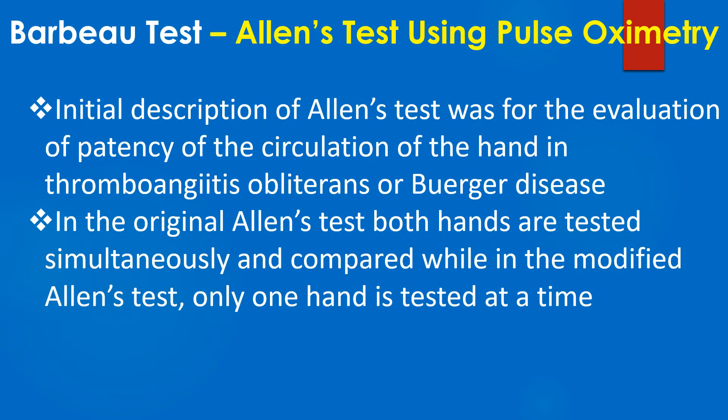The initial description of Allen's test was for the evaluation of patency of the circulation of the hand in thromboangiitis obliterans, or Buerger's disease. In the original Allen's test, both hands were tested simultaneously and compared, while in the modified Allen's test, only one hand is tested at a time.